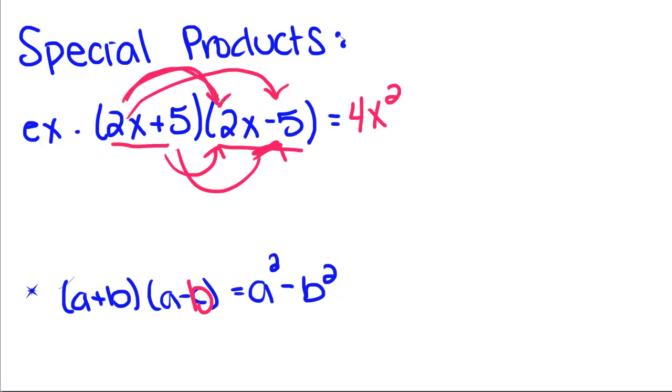So that was first, now we're going to go outside, 2x times negative 5, negative 10x. Inside, 5 times 2x, positive 10x, and 5 times negative 5, negative 25.